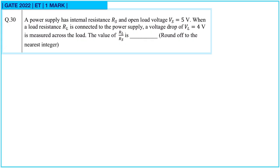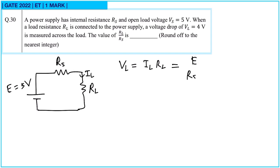Next question. A power supply has internal resistance RS and open load voltage Vs equal to 5 volt. So here internal resistance RS and open load voltage Vs equal to E equal to 5 volt. When the load resistance RL is connected to power supply, this is connected to it RL. A voltage drop VL equal to 4 volt is measured across the load. Now VL is equal to current flowing through it IL times RL. And current is given by this battery, that will be equal to E upon RS plus RL into RL.